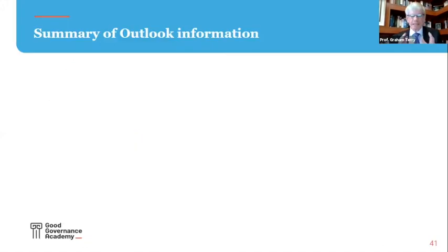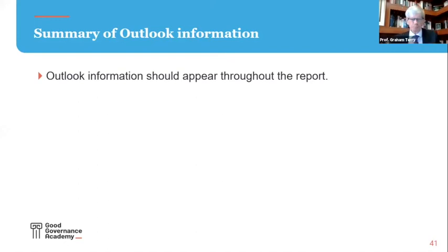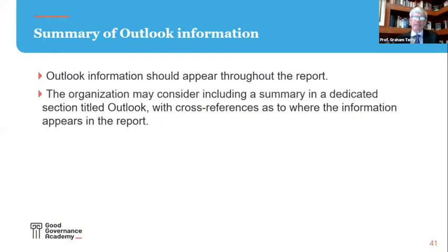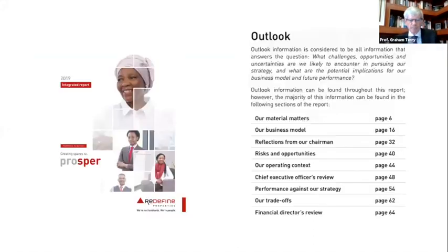I said earlier that organisations often don't have a separate section on Outlook because Outlook appears throughout the report. But some organisations actually like to do a summary and then cross reference it to where you can find the detailed information in the report. Redefine does this — there's a short overview, and then you can go to various pages in the report to pick up more information.